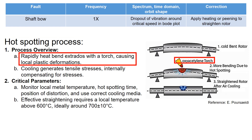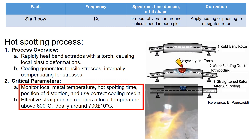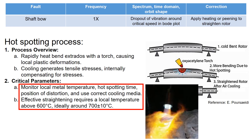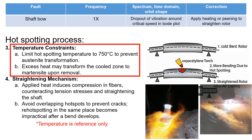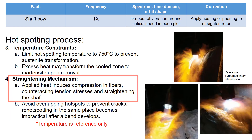In the hot spotting stage, rapid heat is applied by torch causing local plastic deformation, and cooling generates tensile stresses, internally compensating for stresses. Effective straightening requires a local temperature above 600 degrees Celsius, ideally around 700 plus or minus 10 degrees Celsius. Note that these temperatures are reference only, but please make sure to limit the hot spotting temperature to 750 degrees Celsius to prevent austenite transformation. Also avoid overlapping hot spots to prevent cracks. The applied heat induces compression in fibers, counteracting the tension stresses and straightening the shaft.